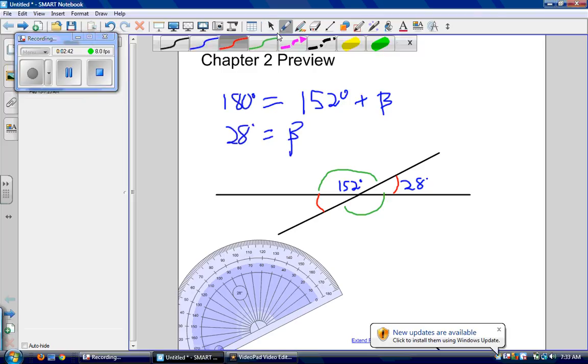So now without doing any calculations, I know that my green angle on the bottom here is going to be equal to 152 degrees, and I know that my red angle right here is going to be equal to 28 degrees because they're vertically opposite.